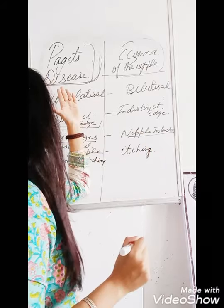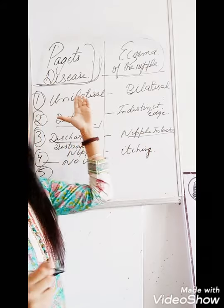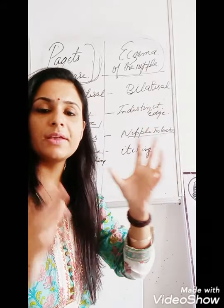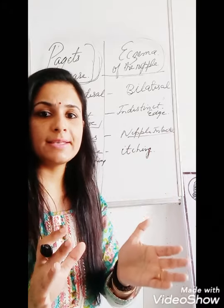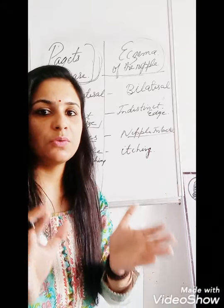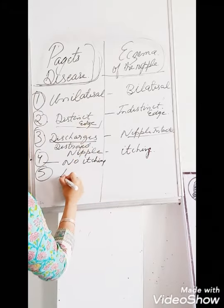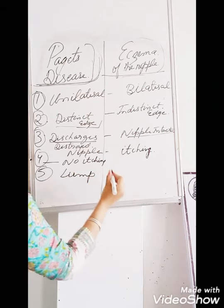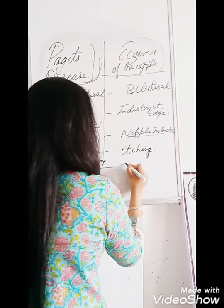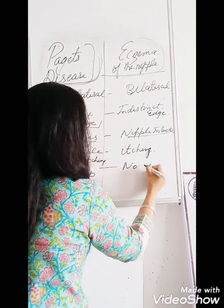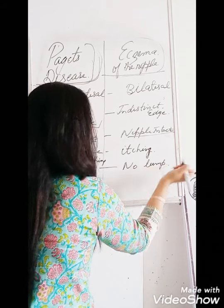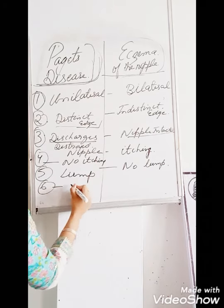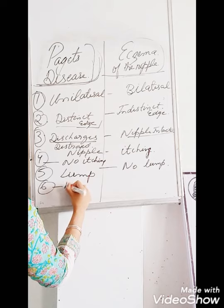The sixth and very important difference is the presence of a lump. In breast carcinoma or Paget's disease of the nipple, during examination you will find a lump inside the breast. There is no lump in the case of eczema of the nipple. Also, in Paget's disease there are no vesicles.